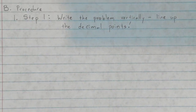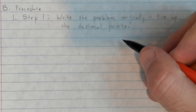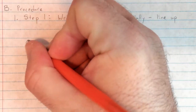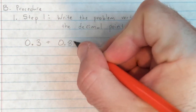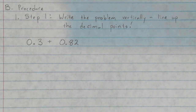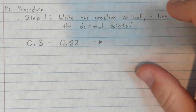Lining up the decimal points ensures that we are lining up all of the place value columns — ones with ones, tens with tens, and going into the decimals: tenths with tenths, hundredths with hundredths. So if I have something like three tenths plus eighty-two hundredths, we need to line them up vertically. This is the standard algorithm — this is how you normally add things together.